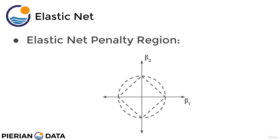Now what does this actually look like in regards to the penalty region? Here we can see the dashed lines for lasso as that square and ridge as that circle. When you begin to calculate this as a subject-to elastic net penalty, it ends up looking like a bit of a curved cube or curved square.